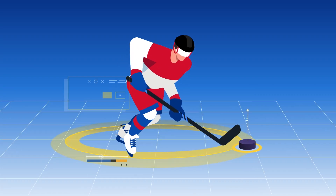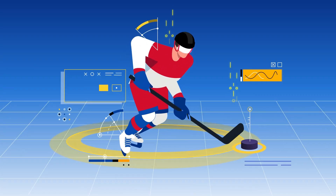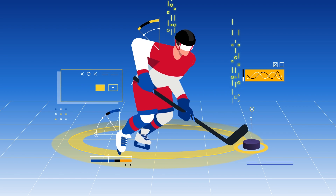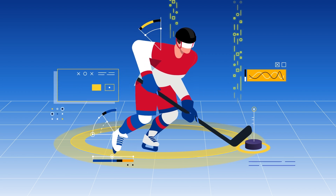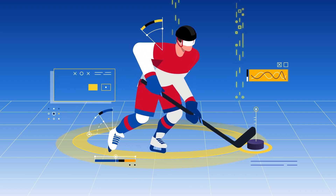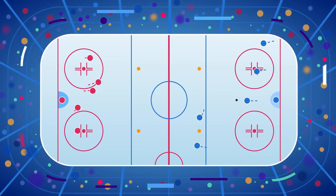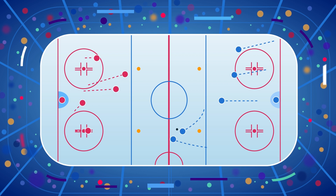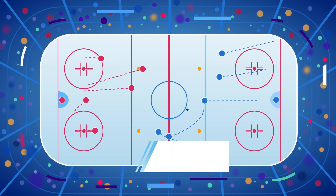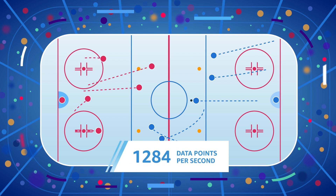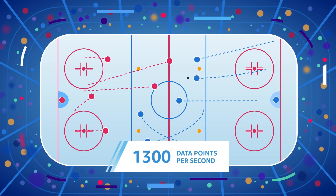To calculate Ice Tilt, gigabytes of data are analyzed from the NHL Edge Puck and Player Tracking System. This NHL Edge system continuously tracks the positioning of players, gathering and transmitting over 1,300 data points per second.